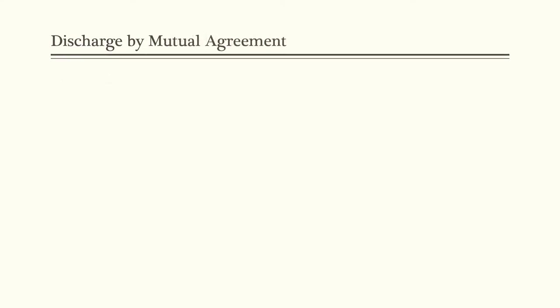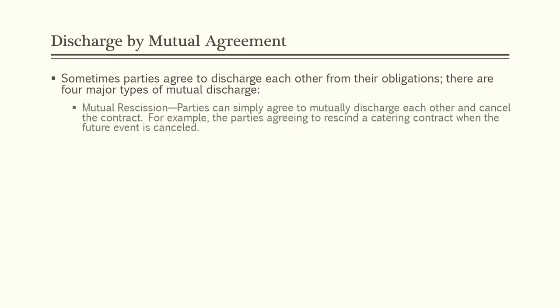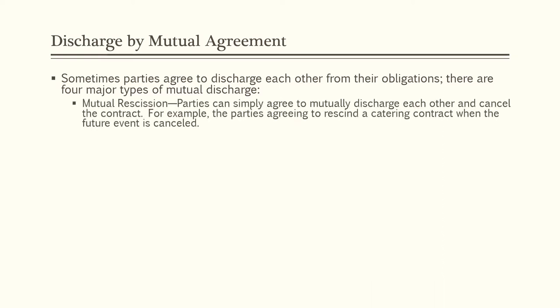Another way to complete a contract is discharge by mutual agreement. Sometimes the parties simply agree to discharge each other from their obligations. There are four major types of mutual discharge. The first is mutual rescission — parties can simply agree to mutually discharge each other and cancel the contract. For example, the parties to a catering contract can agree to rescind it when the future event is canceled.